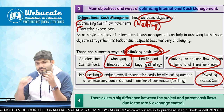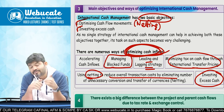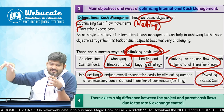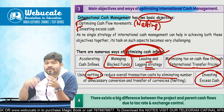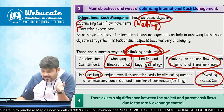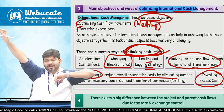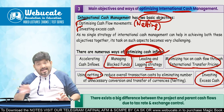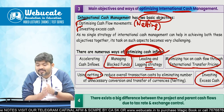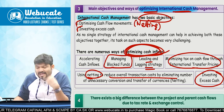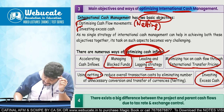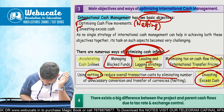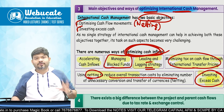Also managing blocked funds — if a subsidiary has blocked funds and another unit needs cash, it can be used internally. All of this is the basic aim of optimizing international cash management: even though subsidiaries may be in the US, India, or other countries, the tax management, cash management, and internal inflows and outflows can be managed optimally. Optimizing cash flow movements and investing excess cash can be done using leading/lagging, transfer pricing, netting, accelerating cash inflows, and managing blocked funds.